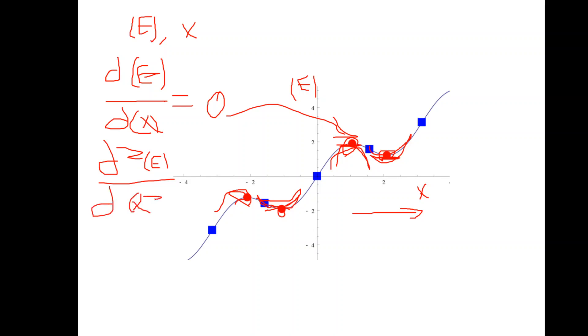The second derivative, if it is greater than zero, corresponds to local minimum, and this is what we are interested in—the lowest energy. If it is less than zero, it is local maximum, so we are not interested in this.